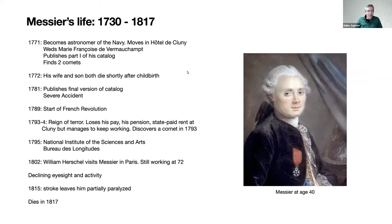In 1771, a lot of things happened in Messier's life. He became astronomer of the Navy, taking over from his boss Delille who had retired. He moved into the Hôtel de Cluny, where he would live for the rest of his life. He also married Marie-Françoise de Vaux-Marchamps and published the first part of his catalog, finding two comets that same year — a very busy year. In the following year, tragedy struck: both his wife and his son died shortly after childbirth. So Messier was married for only one year and remained childless.